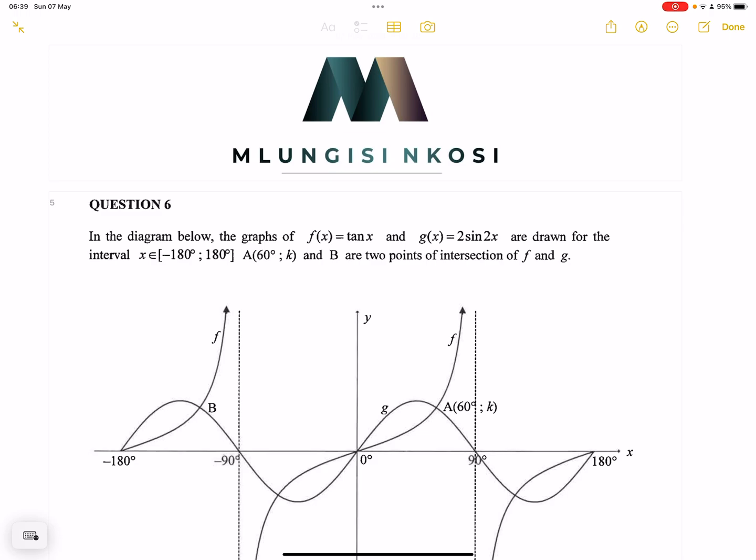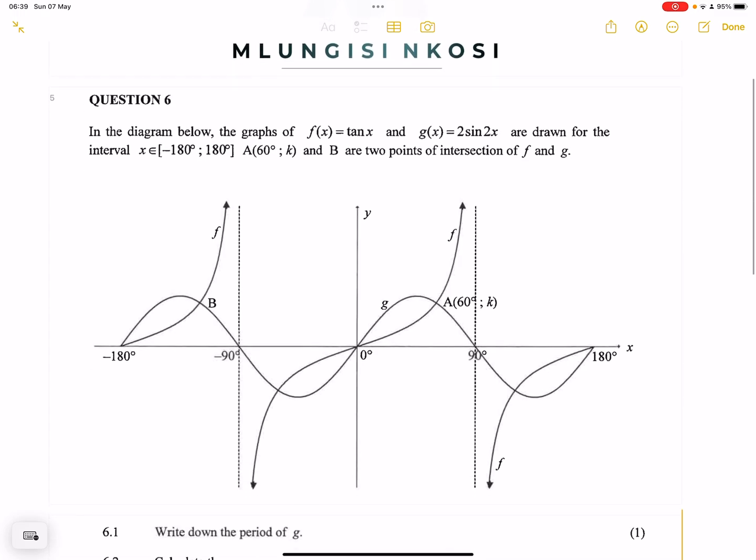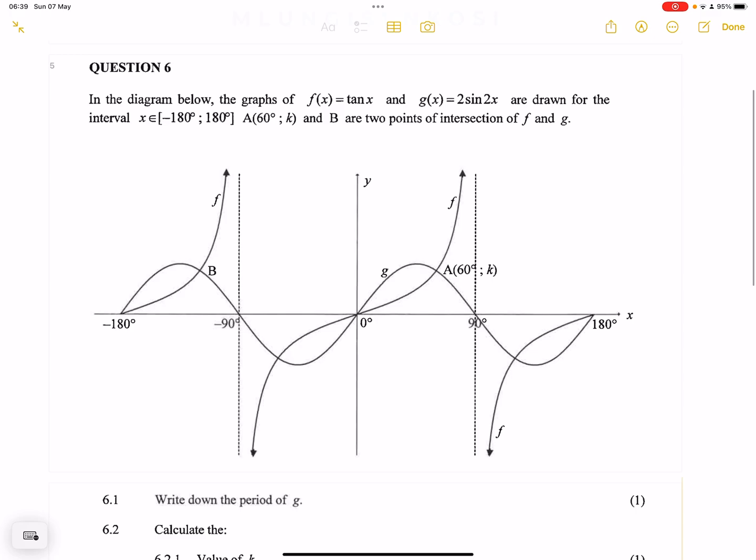We'll jump into it. We're looking at the trigonometric graphs. They say in the diagram below, the graphs of f(x) = tan x and g(x) = 2 sin 2x are drawn between the interval x element of minus 180 to 180, and they're giving us the value there, which is a, the coordinates of a are 60 and k, and b are two points of intersections of f and g.